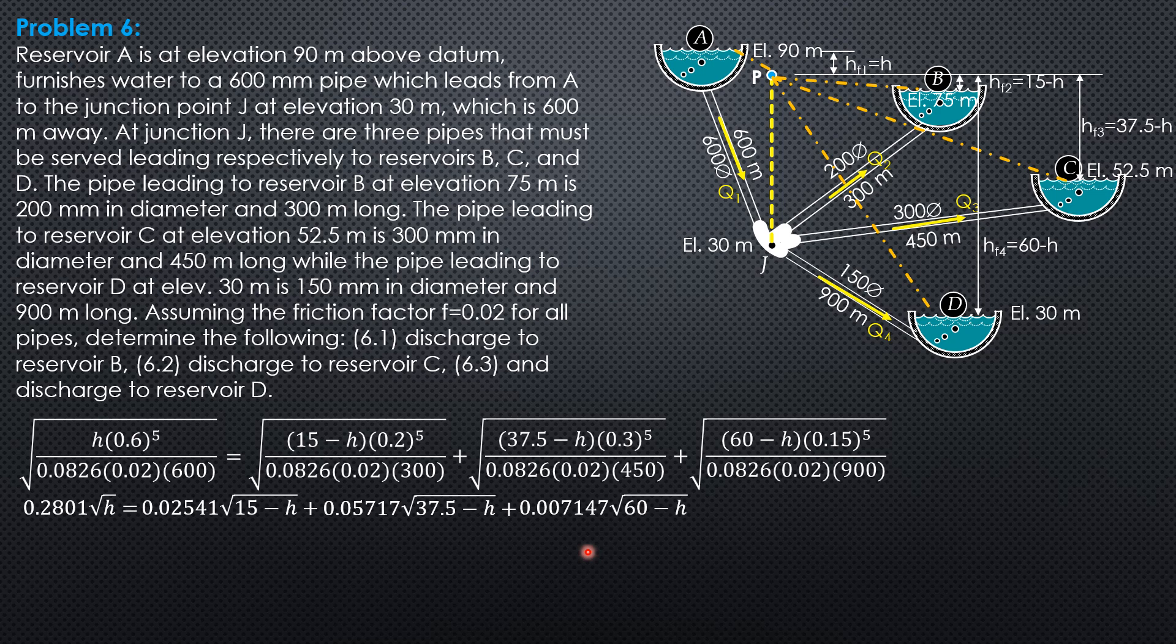Solving for H using trial and error, H is from 0 to 15, then left should be equal to right until you get the value of H. Using the calculator, H is 2.9185 meters.